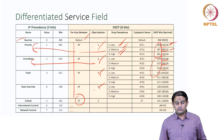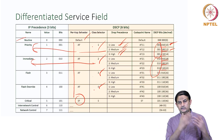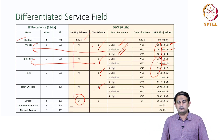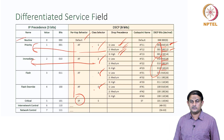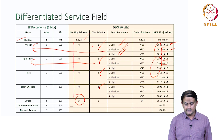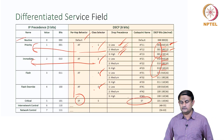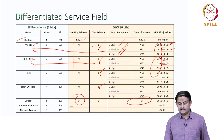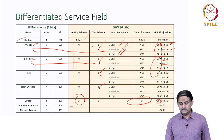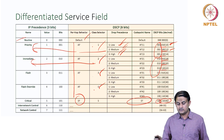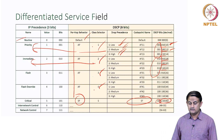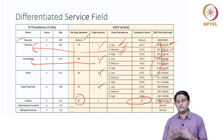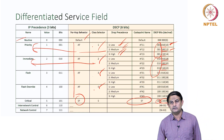That is how the differentiated service model maps to the IP precedence model. The Expedited Forwarding model is the highest priority model, identified by the number 5 — binary 101 — and the highest drop precedence 110. Together these two numbers give a decimal equivalent of 46, which is the EF code point.